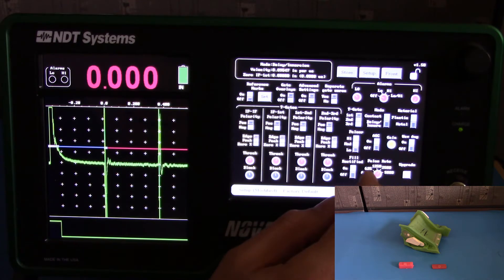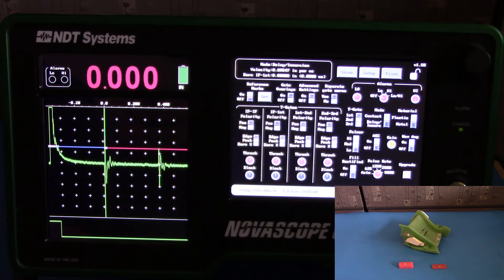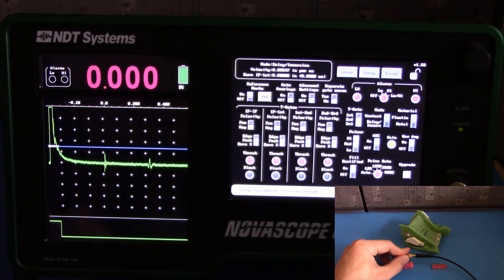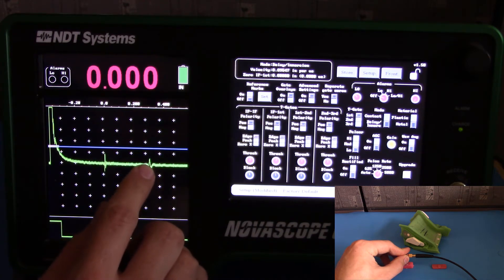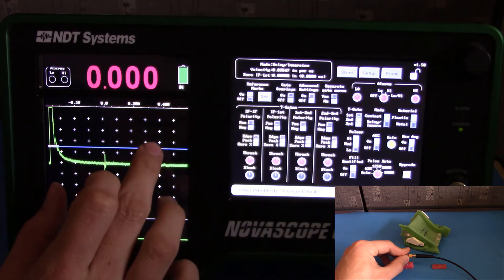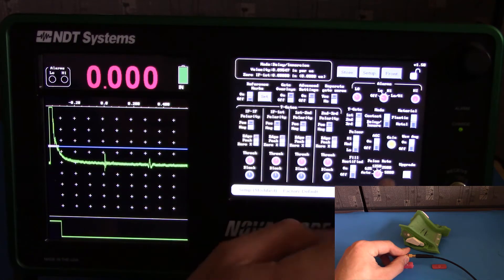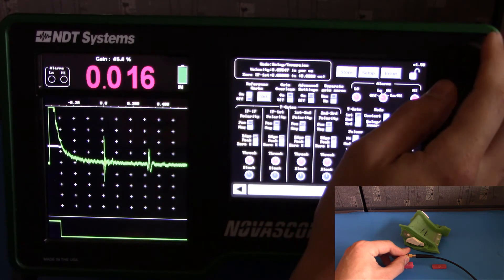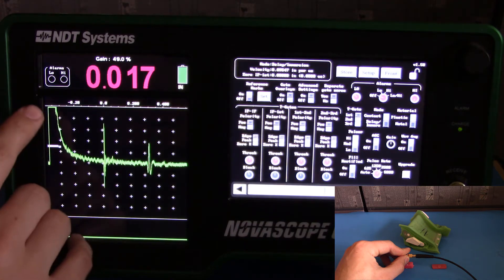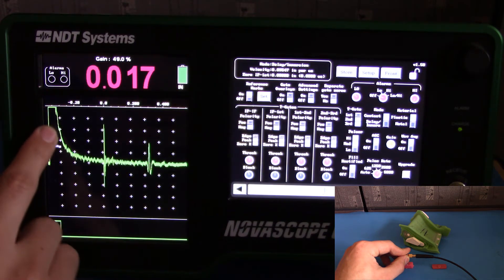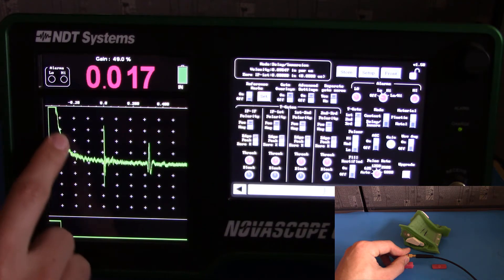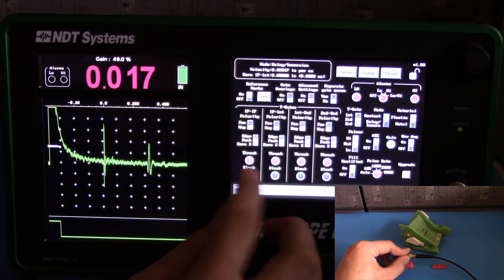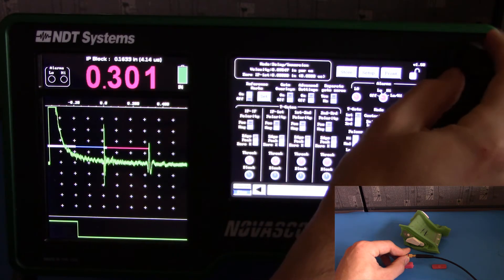Next, we'll want to make sure that our probe and settings are correct. Connect the probe to the thicker sample. You'll see here that the back wall echo, because we're coupled on a wax sample, has dropped quite significantly. We'll need to bring the gain up so that it triggers on our gate. Another complication is that by increasing the gain, you increase the amplitude of the initial pulse. We'll need to block out this additional signal. Go to your IP-IF polarity and hit block. And increase it until you're well past the IP.